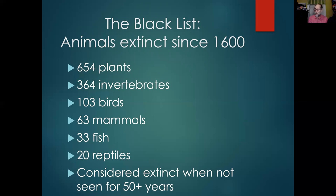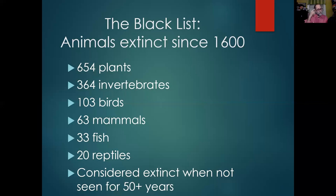There are probably plenty of microscopic organisms and insects we'll never know about. But as far as what they can prove: 654 plants, 364 invertebrates, 103 birds, 63 mammals, 33 fish, 20 reptiles. This changes all the time — these were the general numbers. Usually once an animal is spotted and then there's no more evidence for 50 years or more, at that point they declare that animal extinct — it's gone.